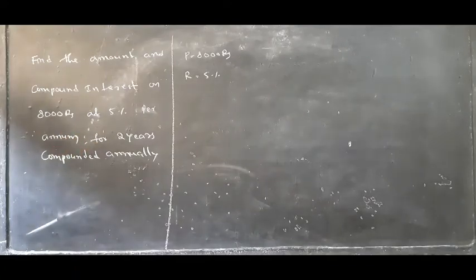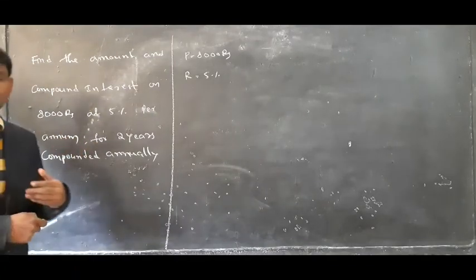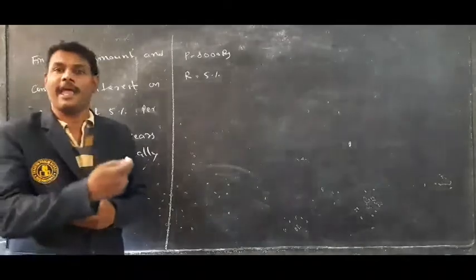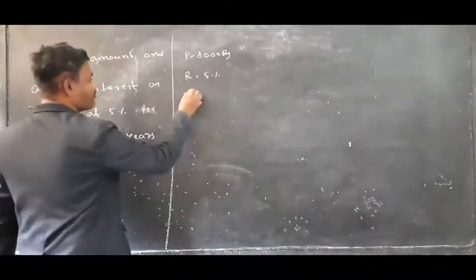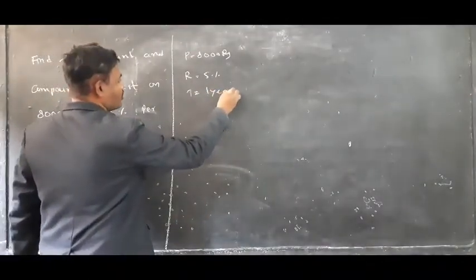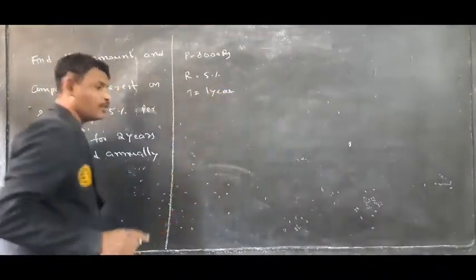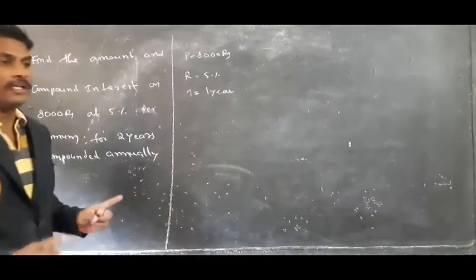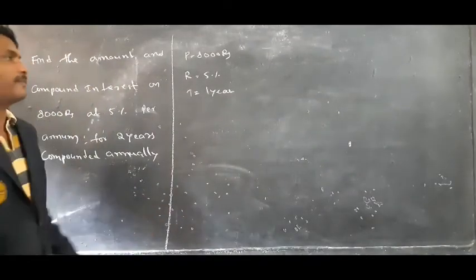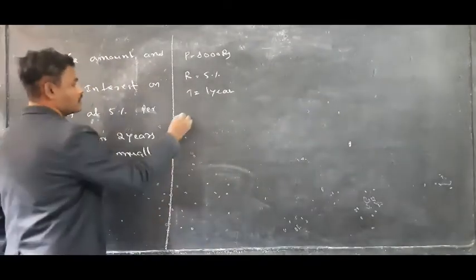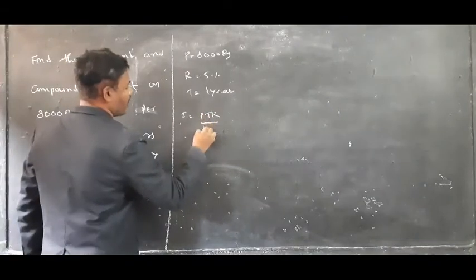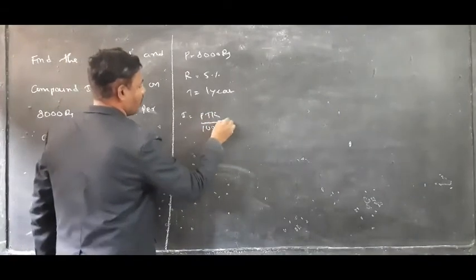For 2 years, compounded annually. Here interest is compounded annually, so T is equal to 1 year. I am going to find the total amount for the first year.